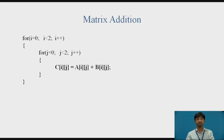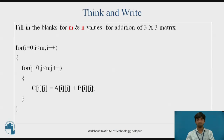In this way, addition is done for A[0][0]+B[0][0], A[0][1]+B[0][1], A[1][0]+B[1][0], and A[1][1]+B[1][1]. The process is repeated until the row index and column index both become equal to 1.